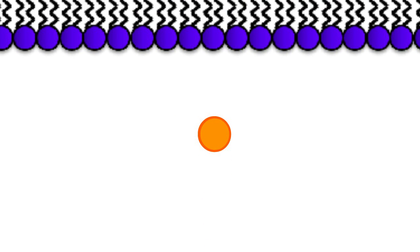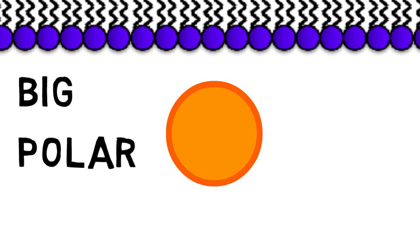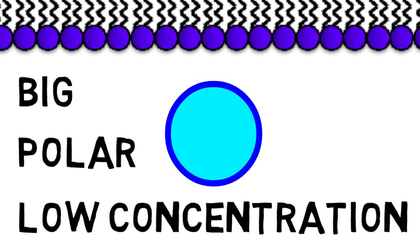However, in reality, there are many molecules which are big, polar, and existing in low concentrations that also need to pass through the cell membrane. So how would they find their way across the membrane?